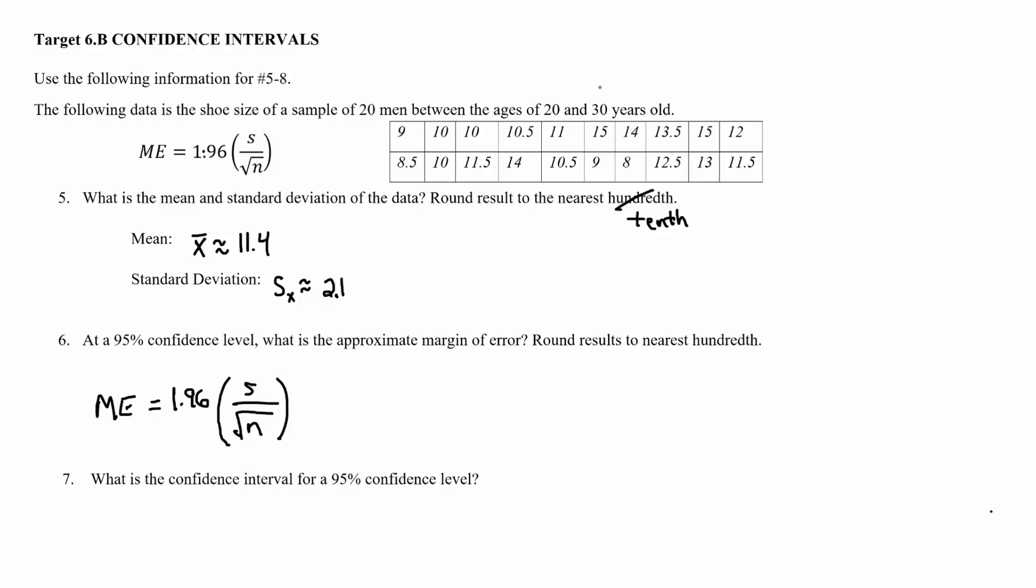In this problem we have 20 men that reported their shoe size and their ages range from 20 to 30 years old. The first question is asking for the mean, and to get that we need to plug all of this information into the calculator and it will kick out the mean as well as standard deviation.